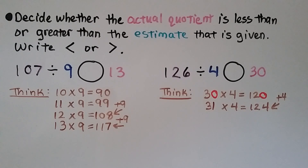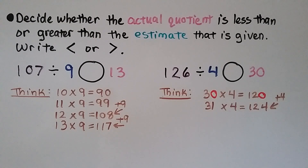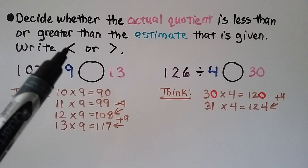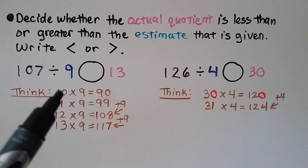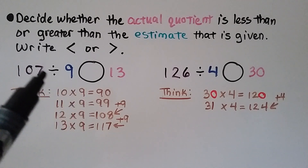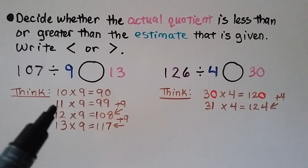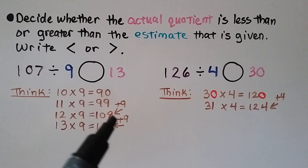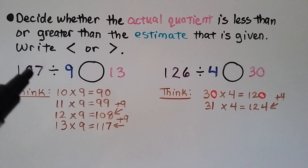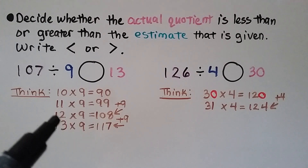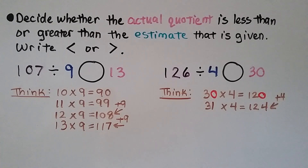Now we need to decide whether the actual quotient is less than or greater than the estimate given — for this one, an estimate of 13. We have 107 divided by 9. We think 10 times 9 is 90, so we start with 10. Then 11 times 9 is 99, 12 times 9 is 108, and 13 times 9 is 117. We only need 107, and 107 is less than 12 times 9, so it's got to be less than 13. So 107 divided by 9 is less than 13.